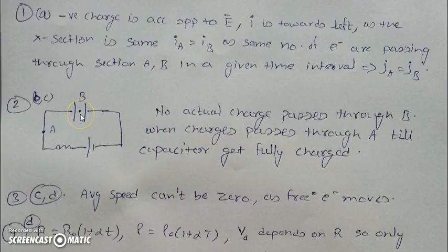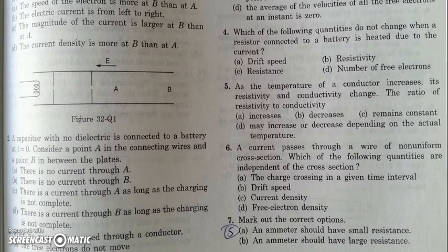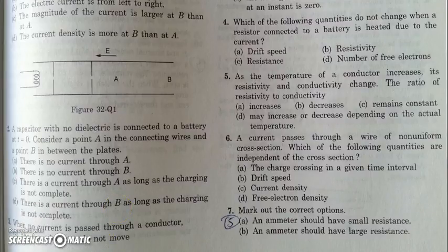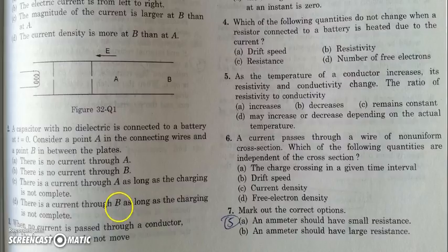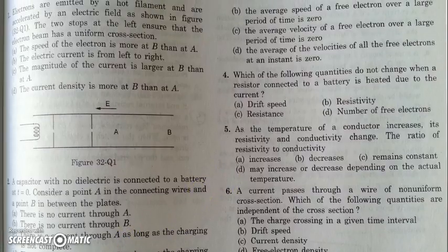There is no actual or conventional current through B; there is a current through B called displacement current, which we will discuss in later chapters. In the next question, it asks whether free electrons move when no current passes through the conductor — yes, they do move, so the statement that they do not move is wrong.